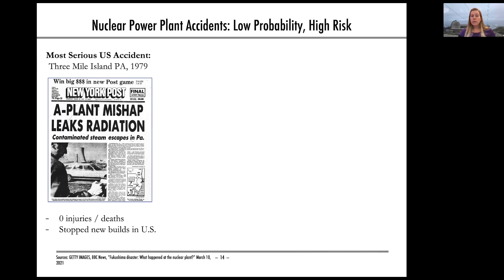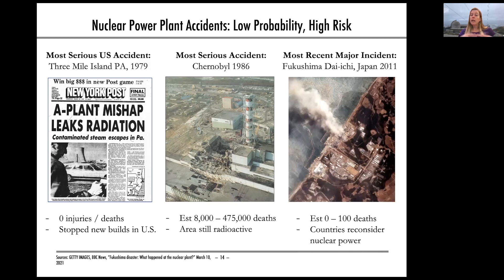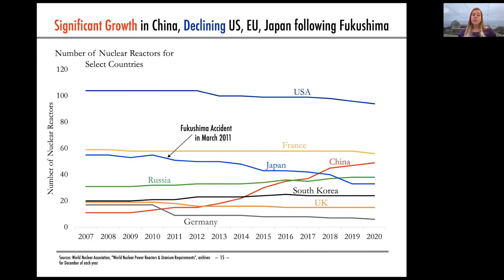There have been no significant new nuclear builds in the U.S. since then. The most serious accident in the world was Chernobyl in 1986 — a significant radioactive release, and the area is still radioactive today with many associated impacts and deaths. The most recent major accident was Fukushima, which had not a lot of injuries or deaths but generated a lot of fear. There was radioactive release seen around the world, and it changed nuclear policy in countries around the world.